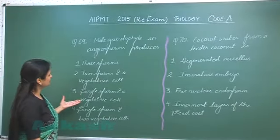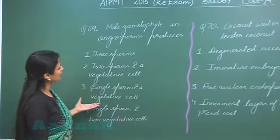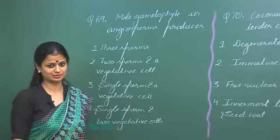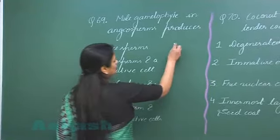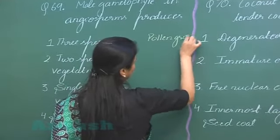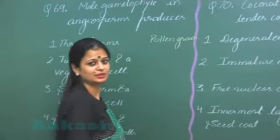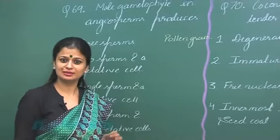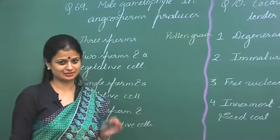Now in question number 69, male gametophyte in angiosperm produces. Pollen grain represents male gametophyte in angiosperm. Initially, pollen grain contains single cell.